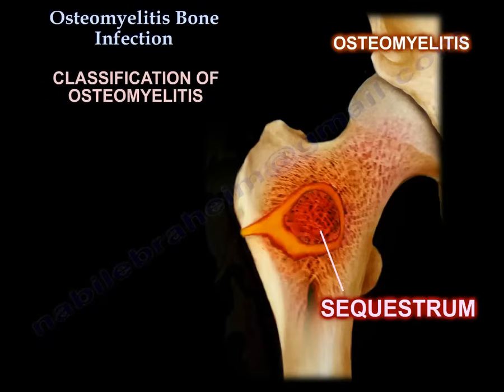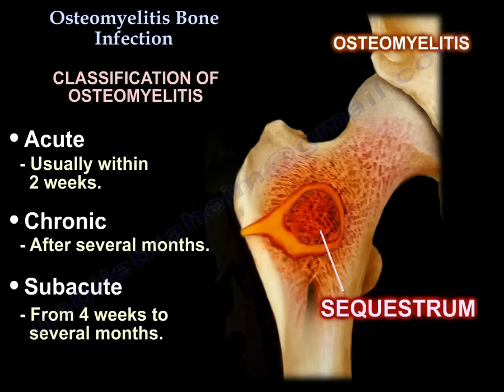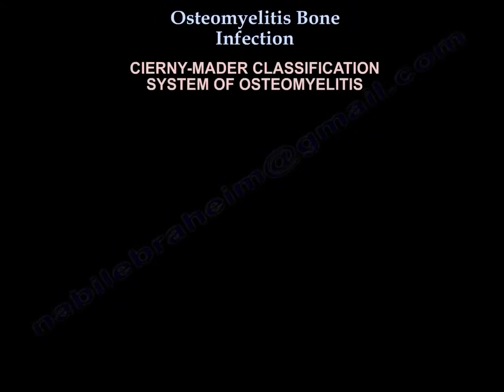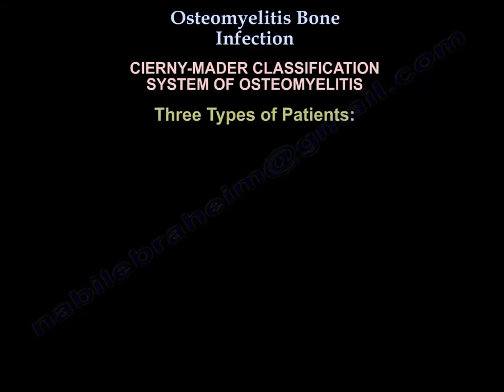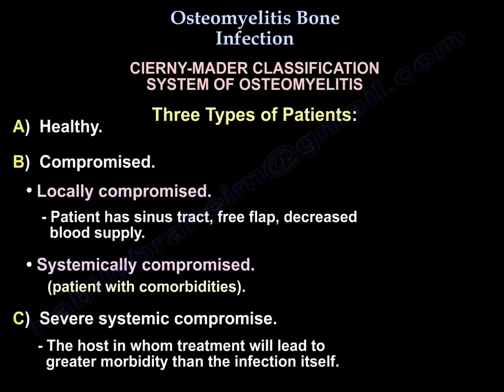Classification of osteomyelitis: acute is usually within two weeks, subacute from four weeks to several months, and chronic after several months. The Cierny-Mader classification describes three types of patients: A is healthy; B is compromised — either locally compromised, such as having a sinus tract, free flaps, or decreased blood supply, or systemically compromised with comorbidities; and C is severe systemic compromise where treatment would lead to greater morbidity than the infection itself.